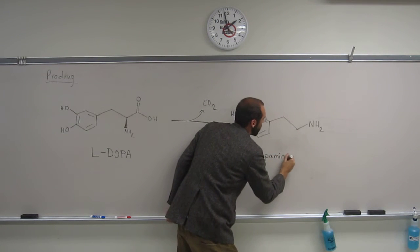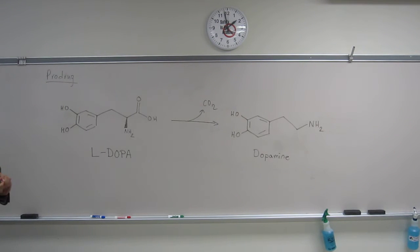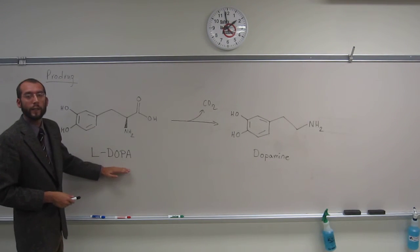Why wouldn't you administer just dopamine to Parkinson's patients? Because dopamine does not cross the blood-brain barrier. You've got to administer something that will cross the blood-brain barrier, and in this case, it's L-DOPA.